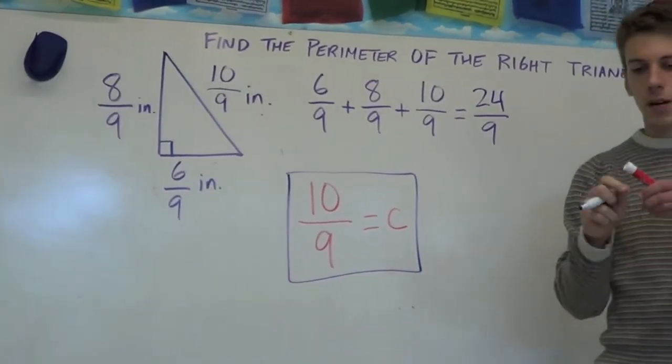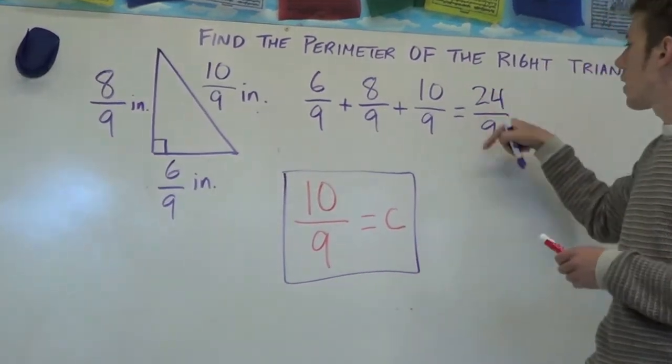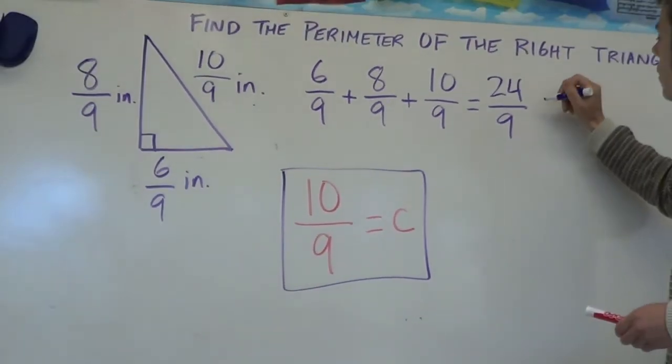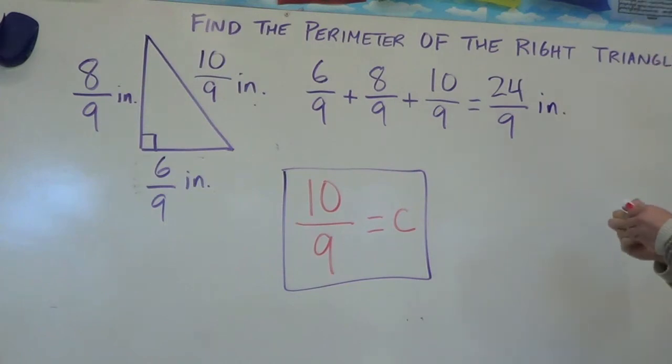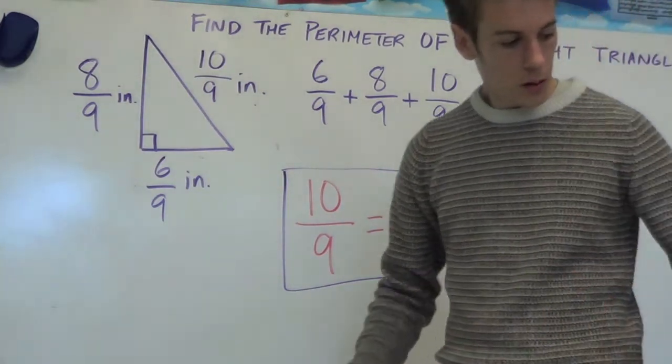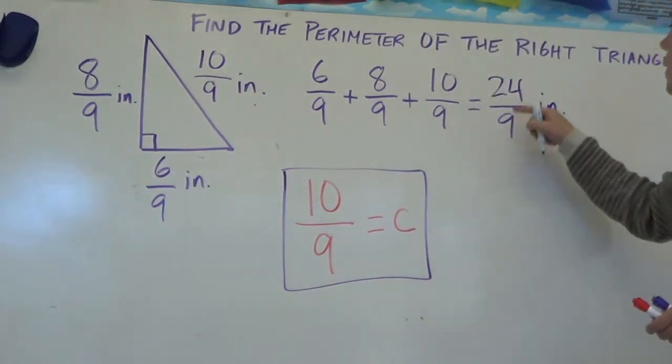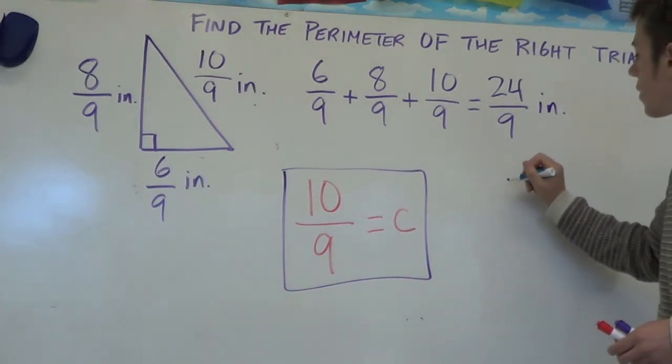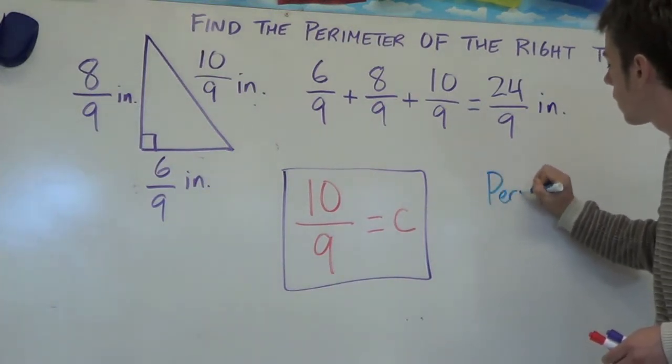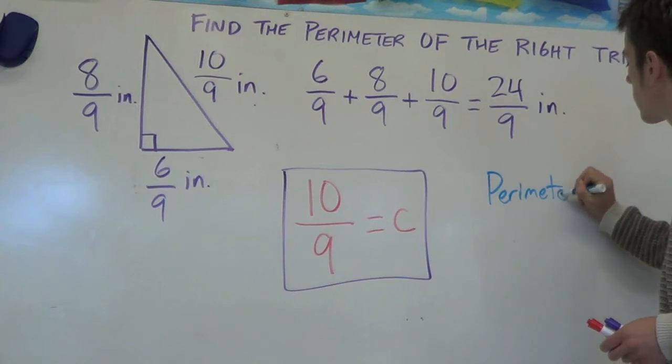And just to make it a little nicer, let's change our final answer to a mixed number. 24 over 9 inches. 9 goes into 24 two times. So the perimeter is going to be 2.